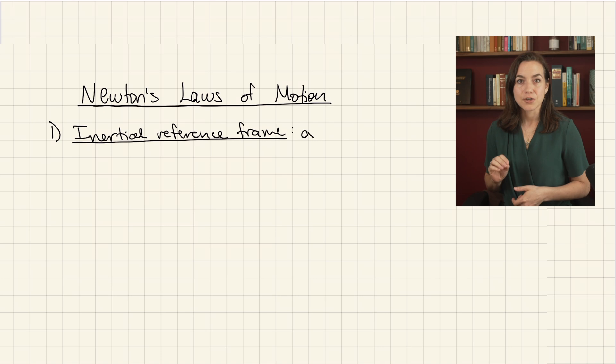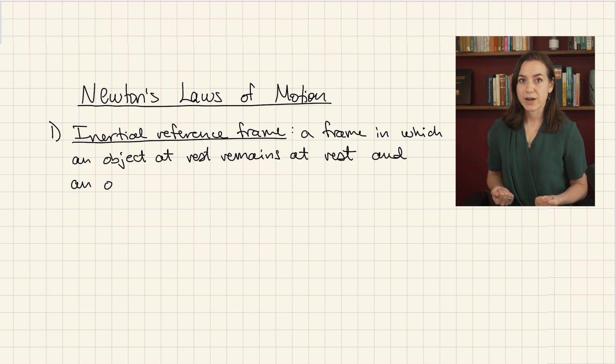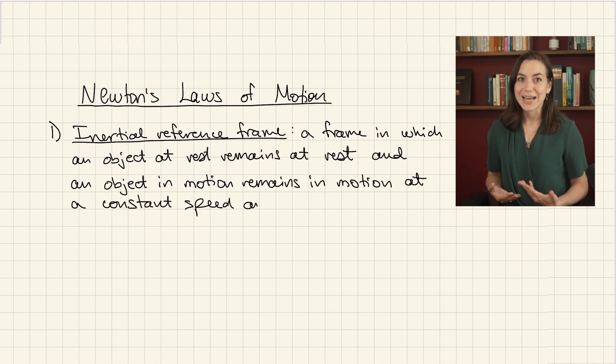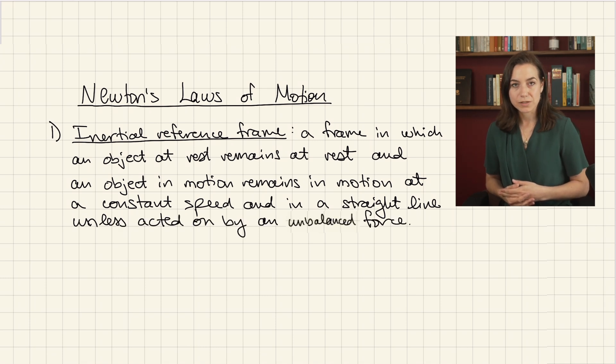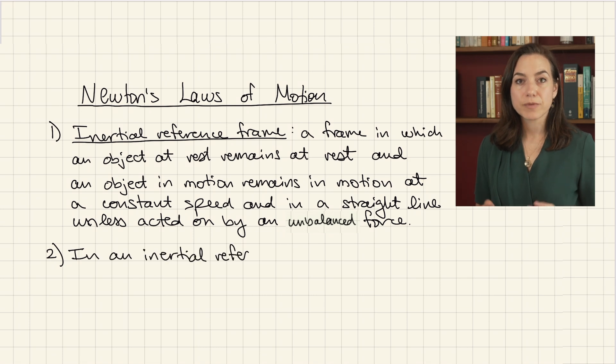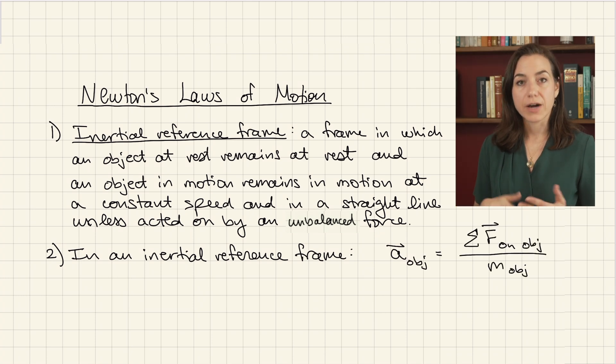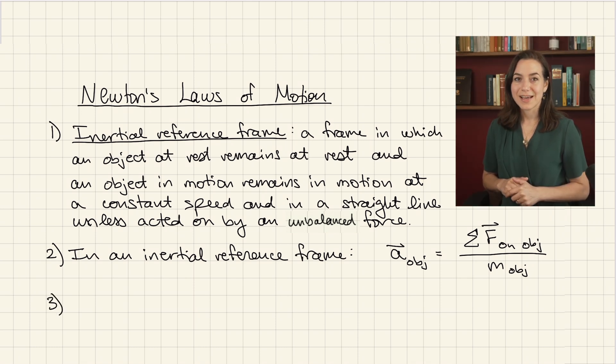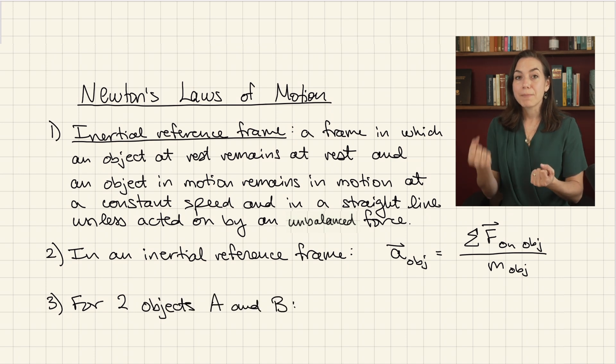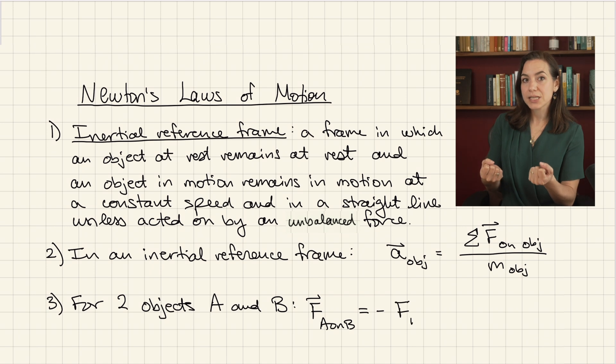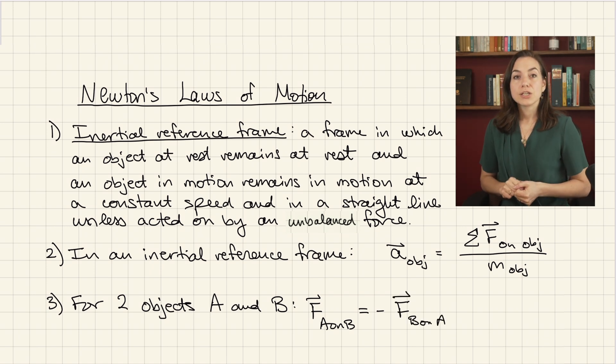So that's it. Let's recap what our three laws of motion are. Law one, definition. An inertial reference frame is a reference frame in which an object at rest will remain at rest and an object in motion will remain in motion at constant speed and in a straight line unless acted on by an unbalanced force. Then, the second law should clarify. In an inertial reference frame as defined by the first law, the acceleration of an object is equal to the sum of all forces exerted on the object divided by the mass of the object. And finally, the third law says, for two objects A and B, the force exerted by A on B is equal in magnitude and opposite in direction to the force that B exerts back on A. So this is what Newton's three laws of motion really mean. Hopefully, these explanations helped you right your leaning tower of physics knowledge. Which one did you find the most helpful? Let me know in the comments and I'll see you next time.